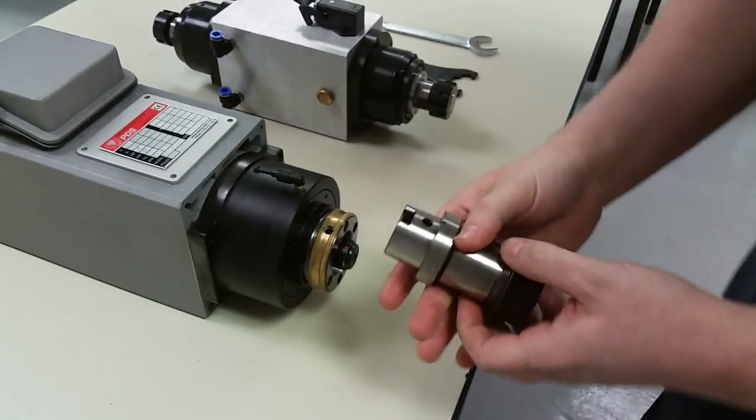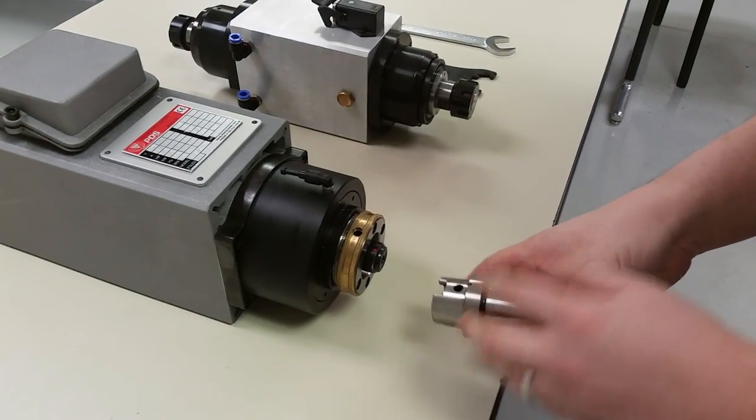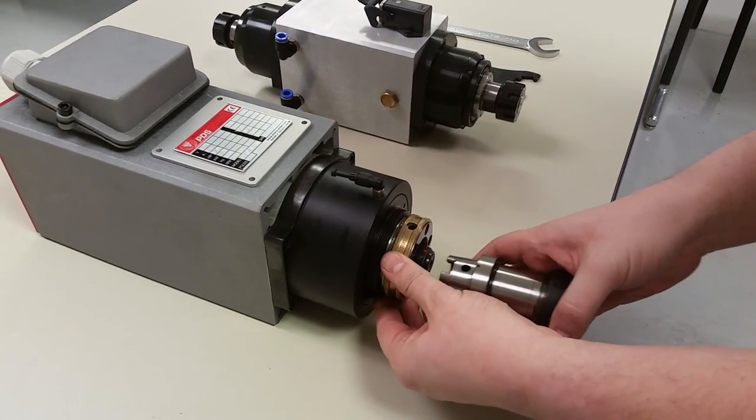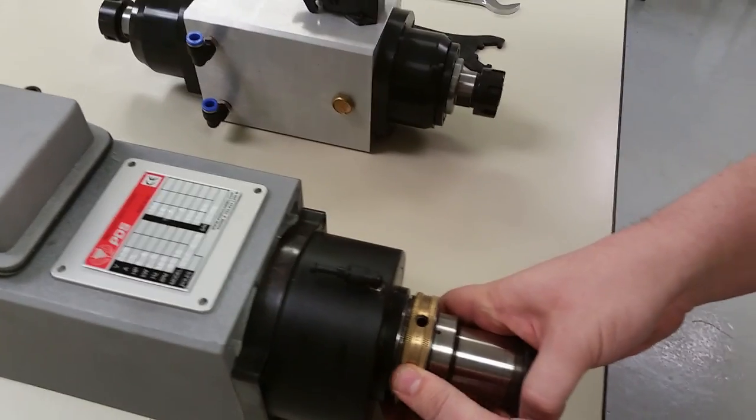You take your tool, your HSKC tool, and you would line it up. This detent needs to be in line with the hole at the top of the nose of the spindle.